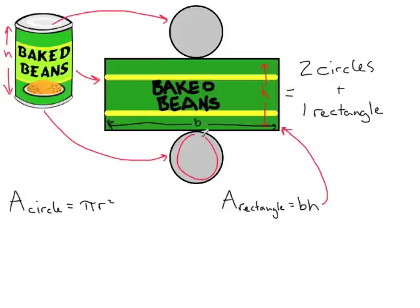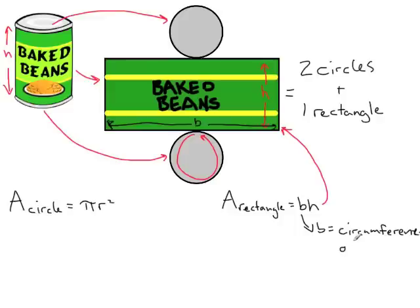The base of this rectangle is going to be equal to the circumference of one of the circles. Since the two circles are the same, it doesn't matter which circle we look at. Let's look at the bottom circle. If we imagine we cut out this circle and unroll it, it'll be the same distance as the base of the rectangle. So the base is equal to the circumference of the circle, which is two times pi times the radius.